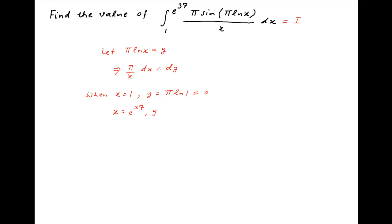When x is equal to e raised to the power 37, y is equal to pi times ln of e raised to the power 37. Using properties of logarithms, this is equal to pi times 37 times ln e, which is equal to 37 pi.